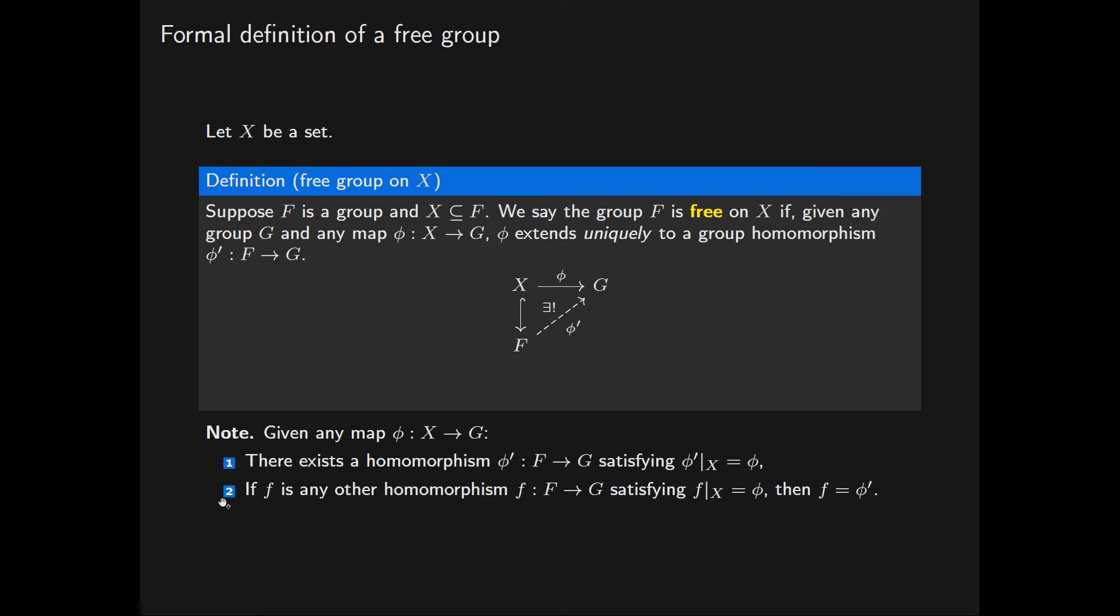But secondly, and this is the crucial point, this condition says that if F is any other homomorphism from the group F into the group G such that the restriction of F to this subset X is also equal to phi, then what we actually have, we have that this homomorphism F itself is equal to the homomorphism phi prime.